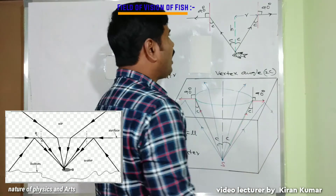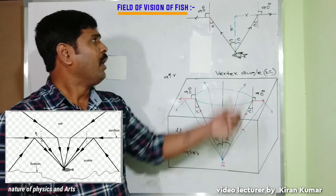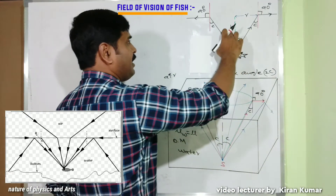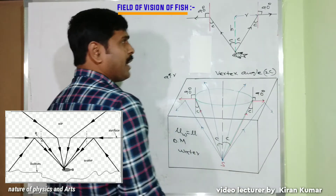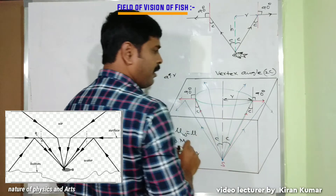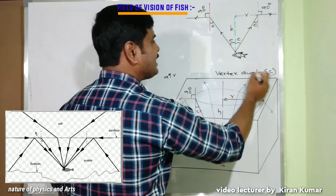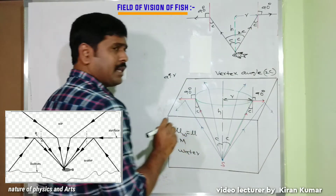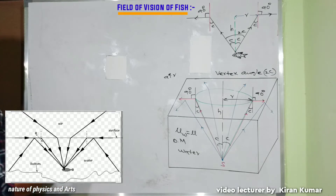The fish can observe the outer world within an inverted cone. Here h is the depth of the water, r is the radius of the circular base, and the total vertex angle of the cone is 2C (that is, C plus C).